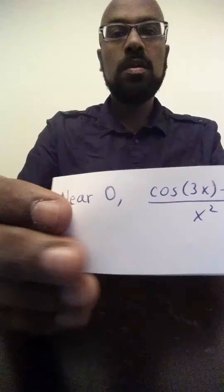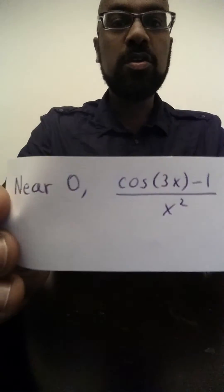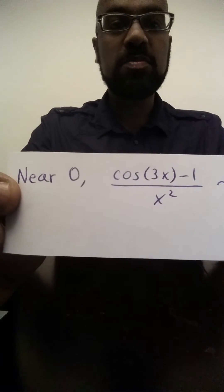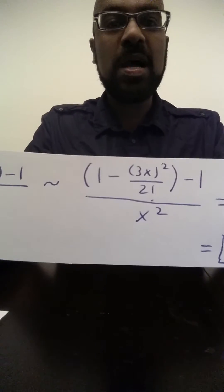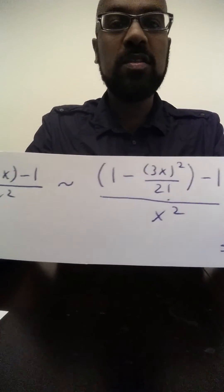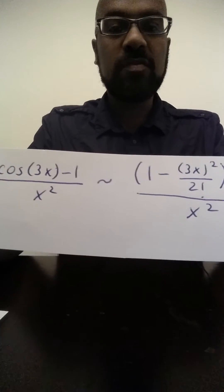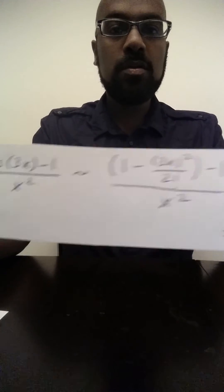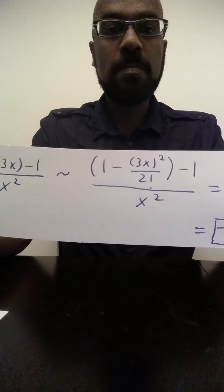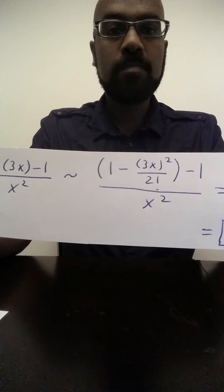In other words, near 0, cosine 3x minus 1 all over x squared can be approximated by this ratio, where we take only the first two terms of the power series expansion of cosine 3x about 0.